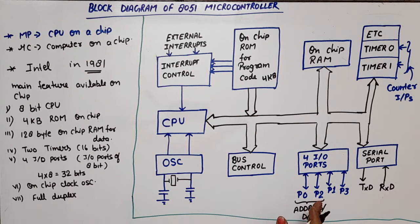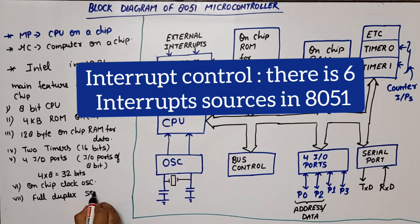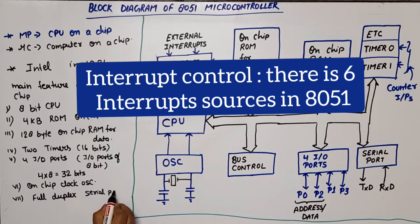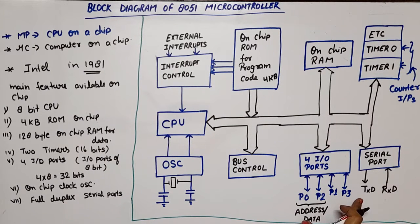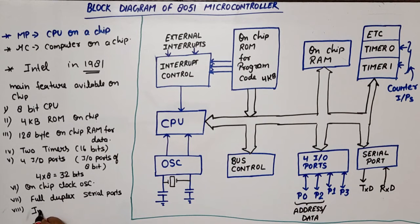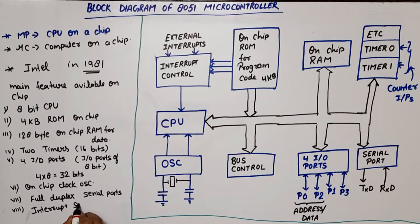The next feature is a full duplex serial port — TXD for transmitting data and RXD for receiving data. The final feature is interrupt sources. When you explain the block diagram, you should cover all these features first.